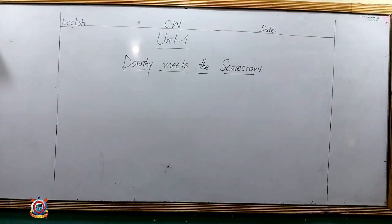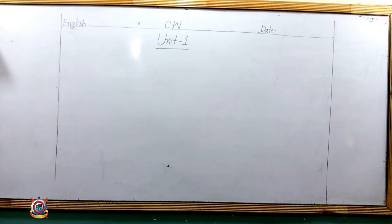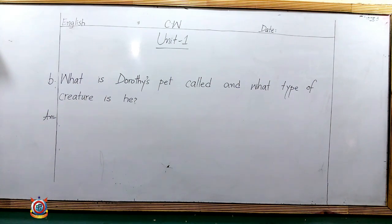Now we are moving on to the next question. For that, you have to move on to the next page as well. On the next page, you just have to write the name of the subject, CW, date, and unit number. You don't need to write the unit name again on every page. Our second question is: What is Dorothy's pet called and what type of creature is he?